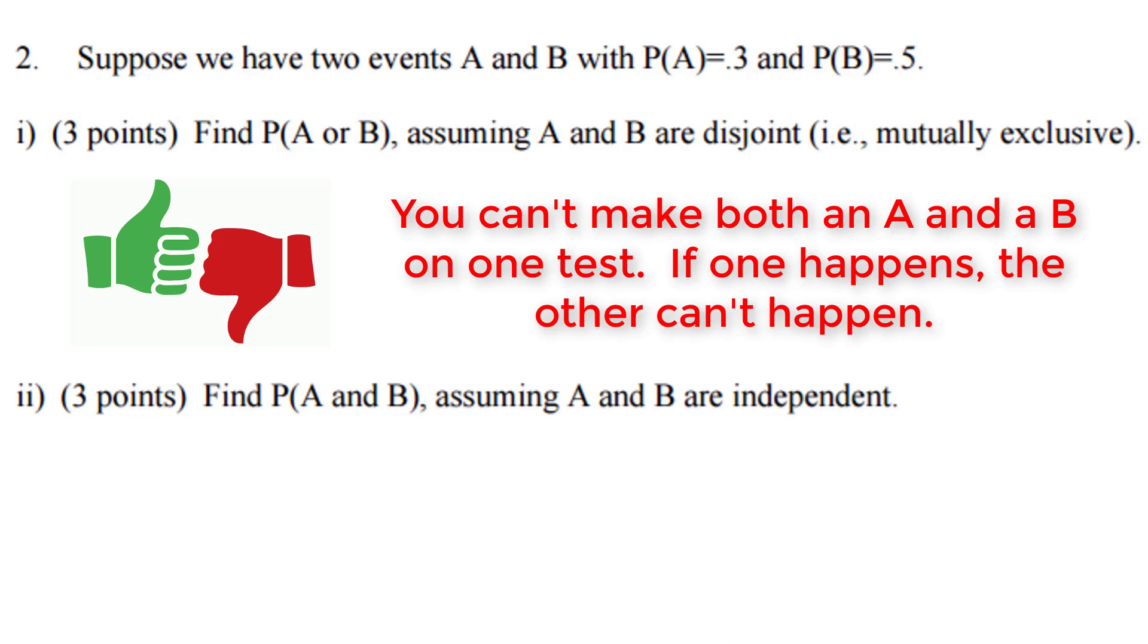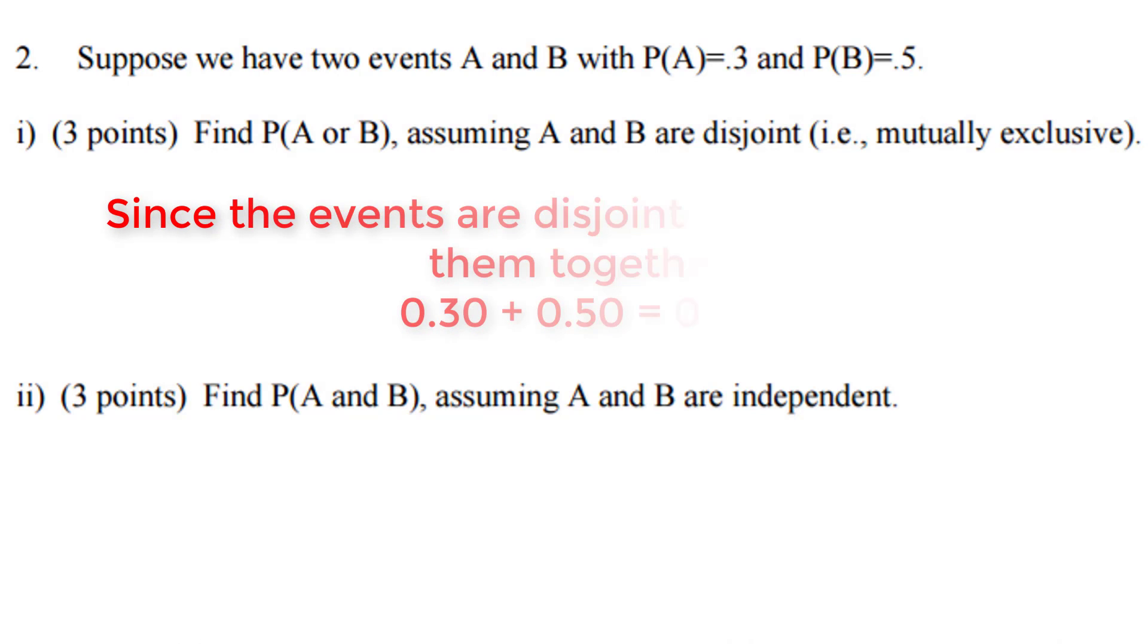As soon as we know one happens, the other cannot happen. So if you made a B on the test, you could not have made an A on the test. Disjoint and mutually exclusive mean the same thing, and it means if one event happens, the other event cannot happen.